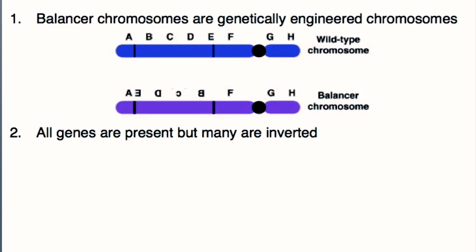Balancer chromosomes are engineered — they are not natural. The wild type chromosome has genes that are in order so that when the chromosomes align, crossing over can take place, which increases genetic diversity. A balancer chromosome has the same genes, but some of them are backwards and out of order. So all genes are there, just not in the right place or the right order. When these chromosomes try to line up and cross over, it's not possible because they won't have homologous regions.